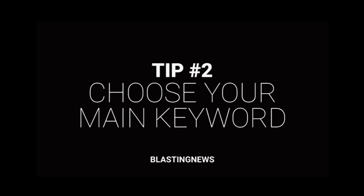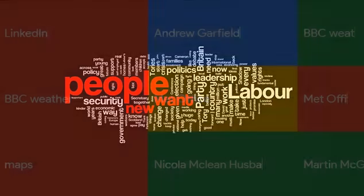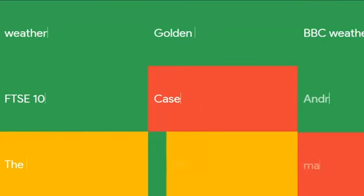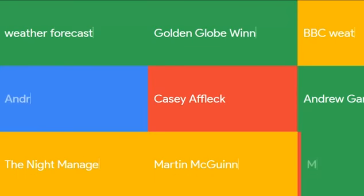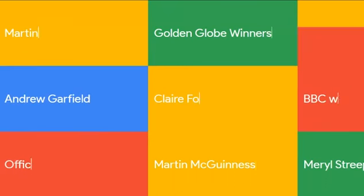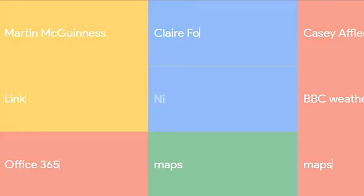Tip number two: choose the main keyword for your article. After you've chosen the topic you wish to write about, you should decide what is the main keyword of your article. The main keyword highlights the key focus of your article and it can be made up of one or two or more words. We suggest using between one to two words.